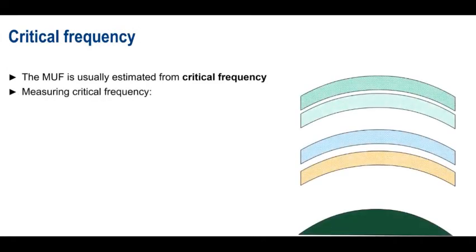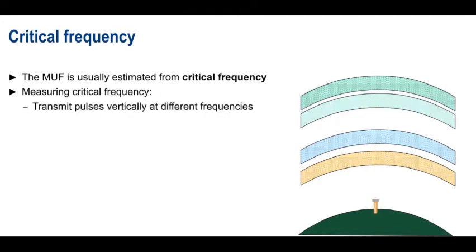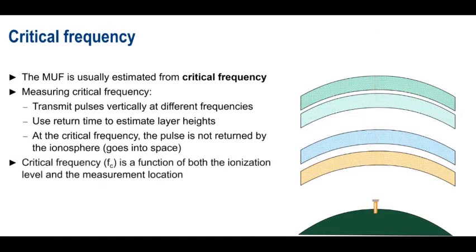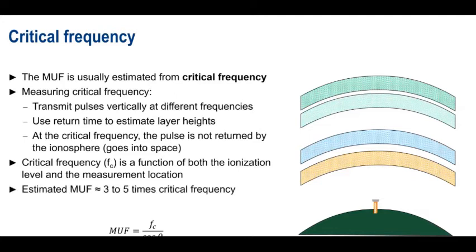One way to determine the MUF is purely through experimentation, but there are also methods for estimating the MUF using something called the critical frequency. The process for measuring the critical frequency is as follows. Pulses at various frequencies are transmitted vertically by equipment called ionisons. Depending on the frequency of the pulse, these pulses are returned by different layers of the ionosphere. And we can use the return time to estimate the heights of the different layers. Once we reach a certain frequency, the pulses are not returned by the ionosphere and instead continue on into space. This is the critical frequency. Critical frequency is a function of both the current ionizational level as well as the measurement location. It's measured regularly at hundreds of locations around the world. Mathematically speaking, the maximum usable frequency is the critical frequency divided by the cosine of the angle of incidence. If we send a signal straight up at 90 degrees, MUF and critical frequency are the same. But as a practical matter, the maximum usable frequency is usually estimated at 3 to 5 times the critical frequency.